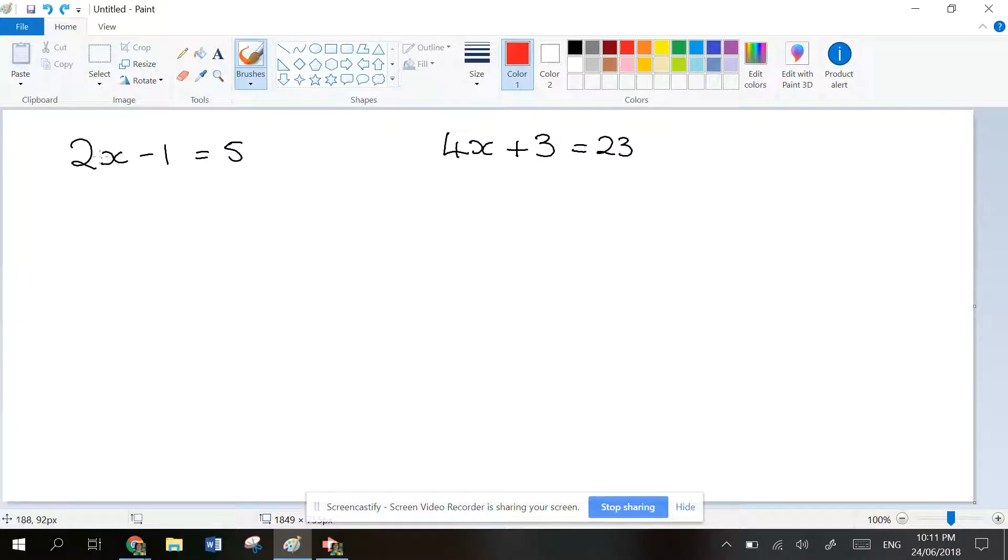So here we've times the x by 2 and then we've minused 1. The opposite is adding 1, so we remove that first. If you add 1 to one side, you have to add 1 to the other side.